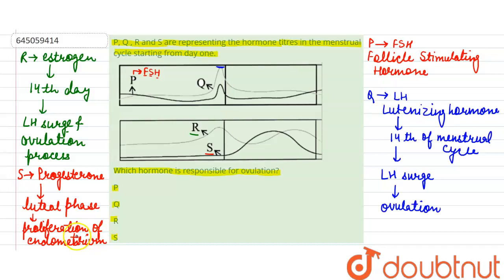So out of the given options, the hormone which is responsible for ovulation is Q. So the answer will be Q. Thank you, students.